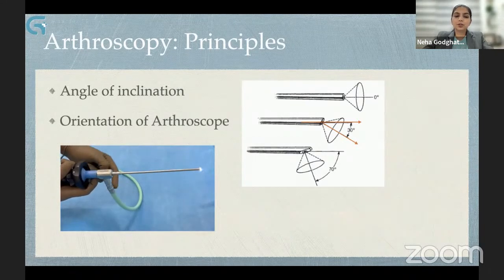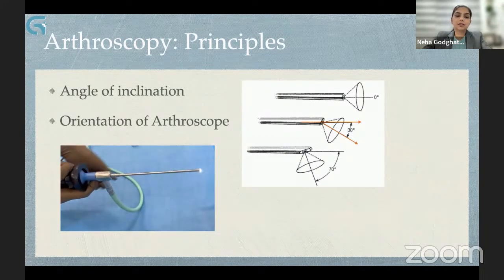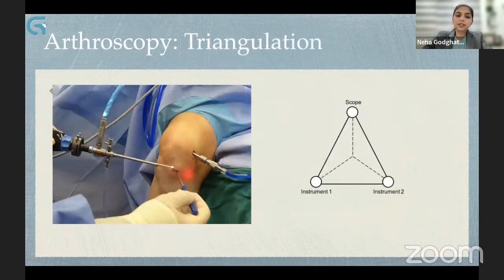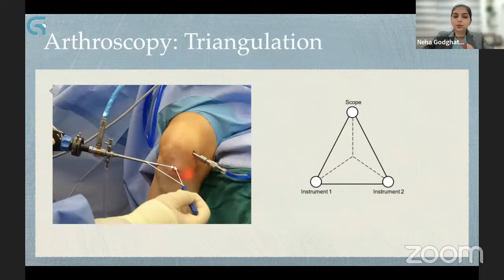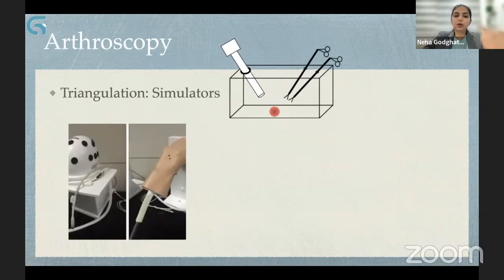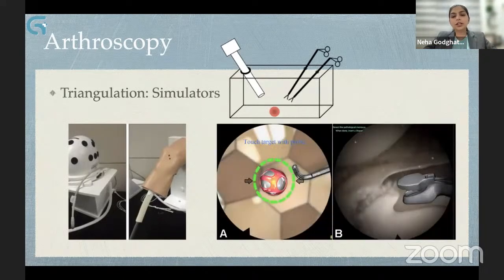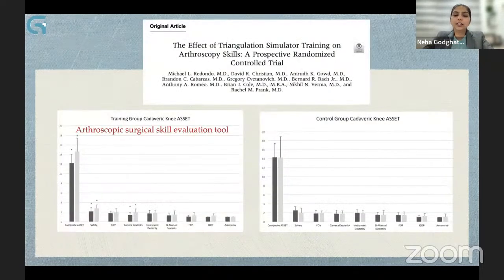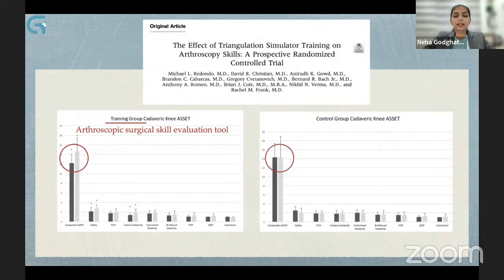Important concepts in arthroscopy: the angle of inclination is the angle between the axis of the shaft of the scope and the perpendicular axis of the lens. The commonly used arthroscope in knee arthroscopy is 30 degrees. The direction of the light cable is exactly opposite to that of the scope lens — this helps in getting orientation of where the scope is inside the joint. Triangulation is the core competency needed in arthroscopy: the tip of the instrument should be visualized in front of the lighted area on the video monitor. Currently, a plethora of arthroscopic trainers are available ranging from low-fidelity non-anatomical models to high-fidelity virtual reality systems. Prospective randomized controlled trials have shown that after training residents on simulators, their cadaver knee ASSET scores increased significantly compared to controls.